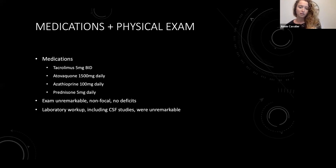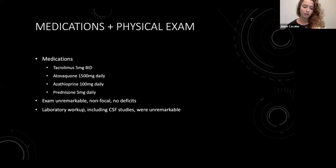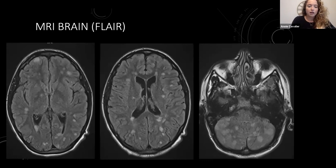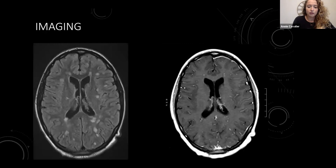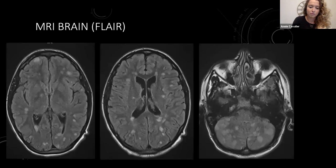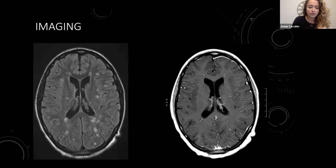He had a pretty extensive laboratory workup by the time we were involved — an LP with the typical studies and some other studies as well, all of which were negative and unremarkable. We were consulted when his MRI brain was done showing these findings on the FLAIR sequence, pretty extensive, and also had contrast enhancement in these lesions pretty much extensively throughout his brain, including cerebellum, brainstem, and basically his entire brain. The contrast enhancement is a little bit difficult to see, but if you look, they correlate.